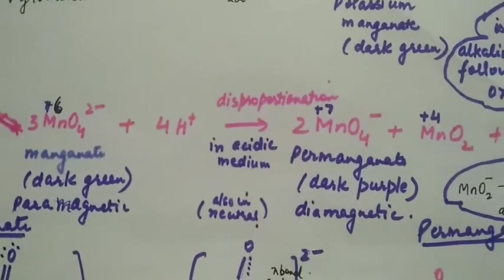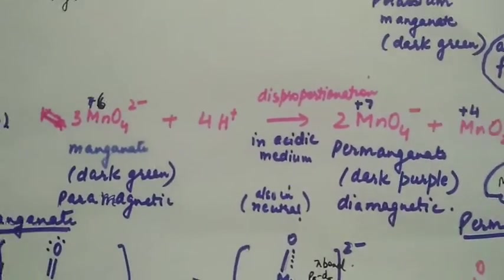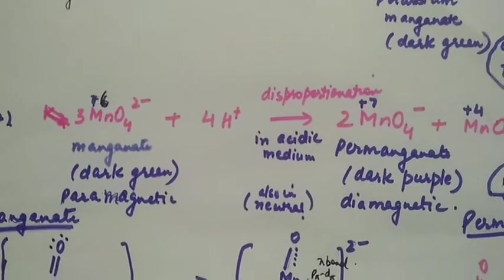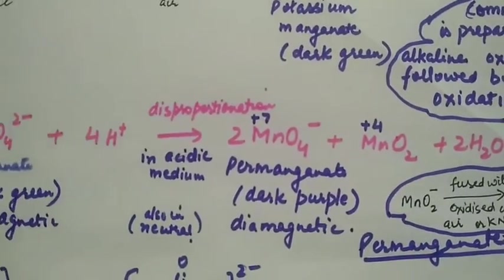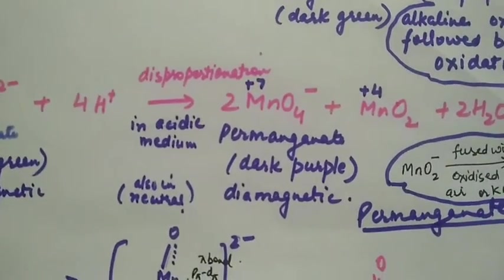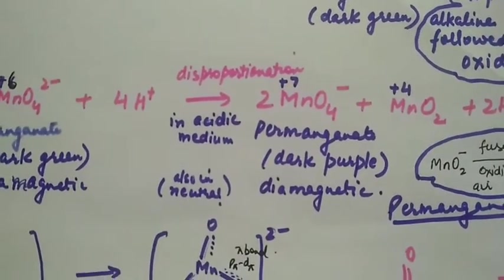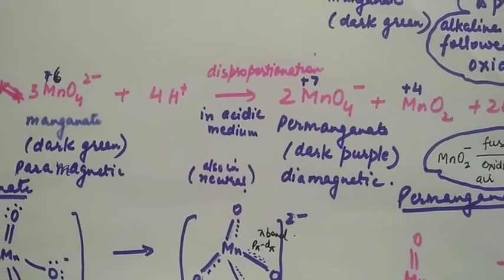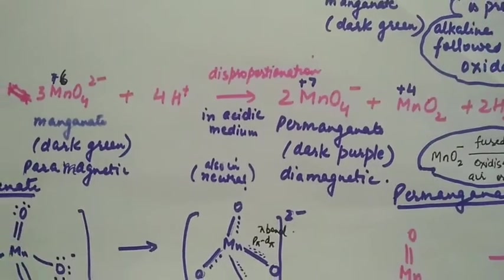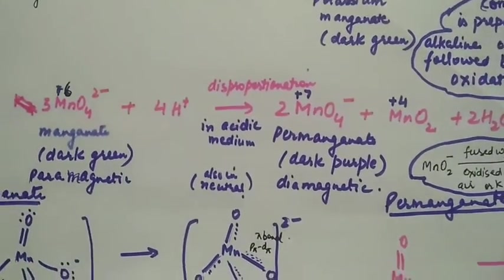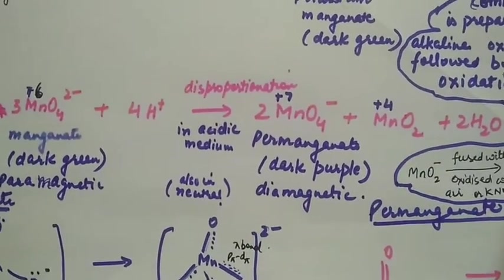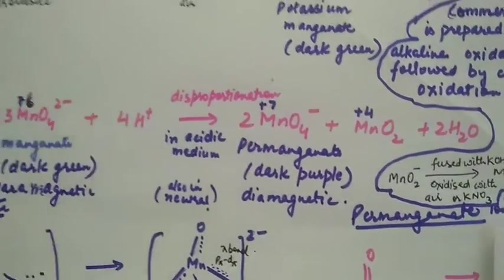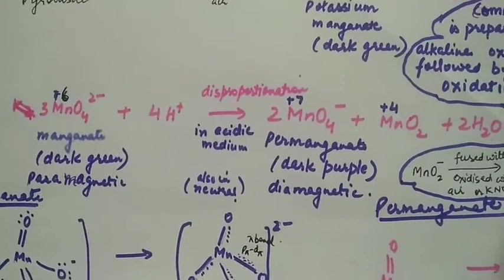This reaction is a disproportionation reaction because in manganate, manganese has +6 oxidation state, and simultaneously it undergoes oxidation to permanganate with +7 oxidation state. This is oxidation, loss of electrons. At the same time, reduction is also occurring from +6 to +4 oxidation state, converting to manganese dioxide. So this is a disproportionation reaction.